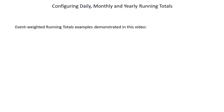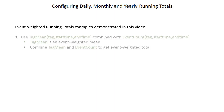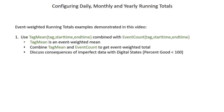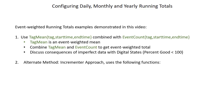We're going to go through a few examples of event-weighted running totals in this video. The first will use the tag mean combined with the event count functions. By definition, tag mean is an event-weighted mean, and we can multiply tag mean by event count to get the event-weighted total. Then we'll discuss the consequences of imperfect data with digital sets, or if your percent good is less than 100%. We'll then go through an alternate approach — the incrementer approach — using multiple functions including badval, nooutput, and prevEvent.